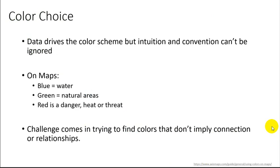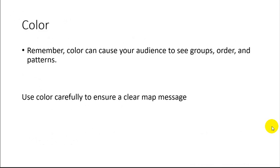Okay, so color choice. Remember, data needs to drive the color scheme, but we can't ignore intuition and convention. Like on maps, blue equals water, period. Green is usually representing some kind of natural area. Red is used for heat, threat, danger. The challenge comes in trying to find colors that don't unknowingly imply some relationship or connection. So if you use two types of red for two different types of features, they might appear related and even ordered. So you have to be careful, but you can use it to your advantage too. You can use a single color for roads, for example, but vary the lightness to communicate whether it's a major or minor road. So remember, color can cause your audience to see groups, order, and patterns, whether you intend them or not. So use color carefully to ensure a clear map or graphic message. Okay, that's it. Thanks.